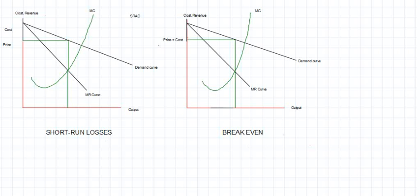From wherever MC intersects MR, you need to extend a line upwards to the demand curve to get the price. When you drop it down to the x-axis, you get the equilibrium output produced.